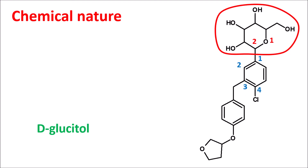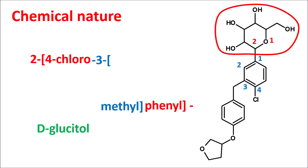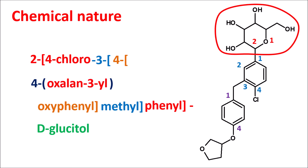At the second position of the deglucitol, a 4-chlorophenyl ring is attached, written as 2-(4-chlorophenyl). To this phenyl ring at the third position, a methyl group is attached — so 3-methyl. To this methyl, another phenyl ring is attached; numbering gives position 1 and 4, which is 4-oxyphenyl. To this 4-oxyphenyl, an oxazine ring is attached at the third position — 4-oxazin-3-yl. That is the complete name of empagliflozin. Empagliflozin is a deglucitol derivative and, because of its sugar moiety, can compete with glucose for occupation of SGLT2, sodium glucose co-transporter 2, thereby inhibiting the transporter to reduce absorption of glucose and sodium into the systemic circulation.